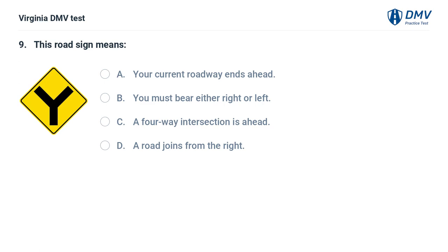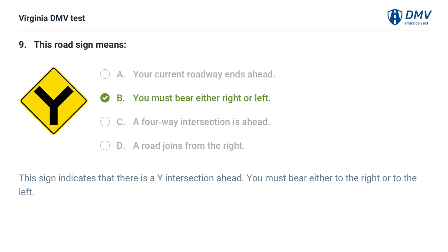This road sign question asks about: A. A four-way intersection ahead, B. You must bear either right or left, C. A road joins from the right. The correct answer is B: You must bear either right or left. This sign indicates that there is a Y intersection ahead. You must bear either to the right or to the left.